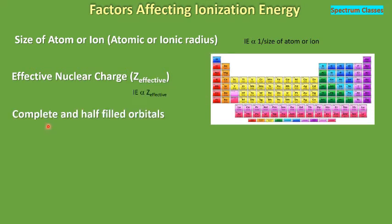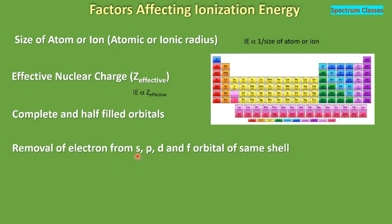Another factor is completely and half-filled orbitals. Due to Hund's rule of maximum multiplicity, completely filled and half-filled orbitals have extra stability; therefore their ionization energy is higher than others. If the rest of the conditions are the same, the difficulty of removing an electron from S, P, D, or F orbitals follows this order: it is most difficult to remove electrons from the S orbital because those electrons are closest to the nucleus, compared to electrons in P, D, or F orbitals.